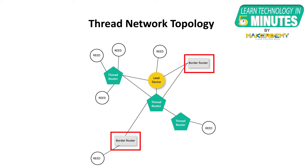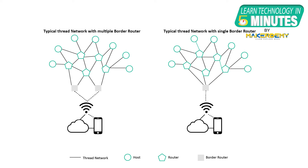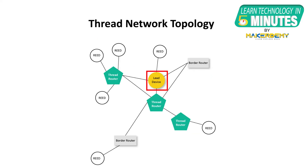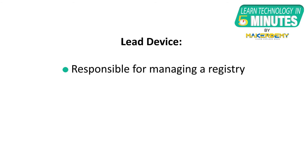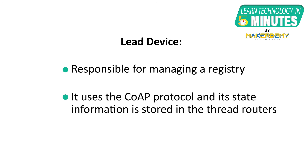The various devices that comprise a Thread network architecture include the following. First, border routers — these are essentially a gateway. In a home network, the Wi-Fi signal acts as a border router. There may be one or more border routers in a network, and using many border routers ensures redundancy and failover capability. Second, lead devices — the lead device is responsible for managing a registry of assigned router IDs. It also controls the request for REEDs to be promoted by routers, uses the CoAP protocol, and its state information is stored in the Thread routers, allowing self-healing of the mesh in case of a failure.